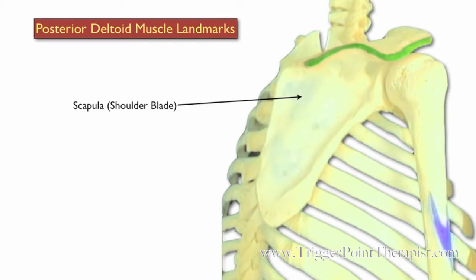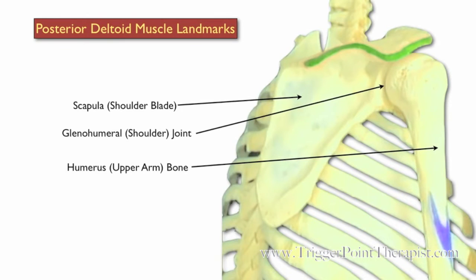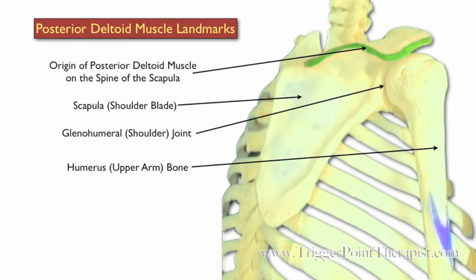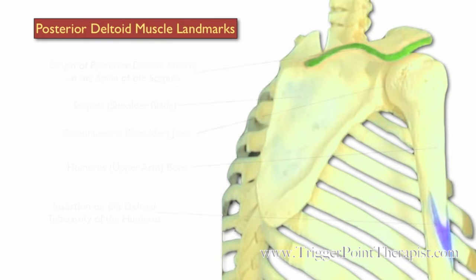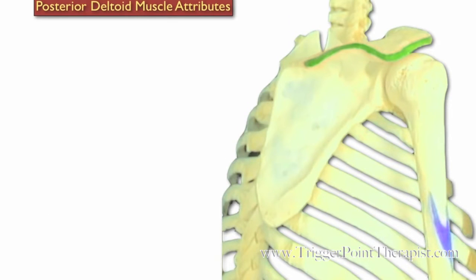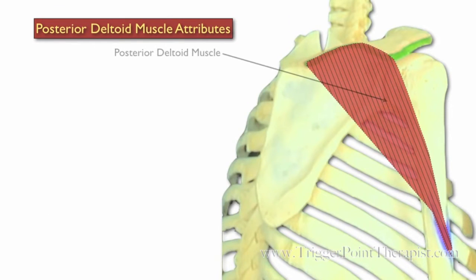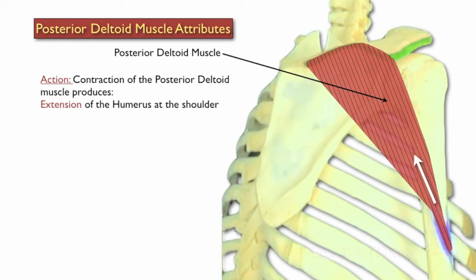Now let's take a look at the posterior deltoid landmarks. We have the scapula, the humerus, and the glenohumeral joint. The origin of the posterior deltoid is on the spine of the scapula, and the insertion is again on the deltoid tuberosity of the humerus. Contraction of the posterior deltoid produces extension of the humerus at the shoulder.